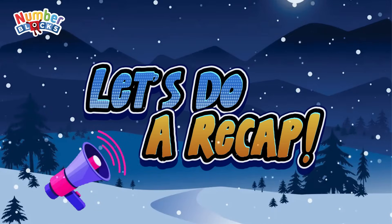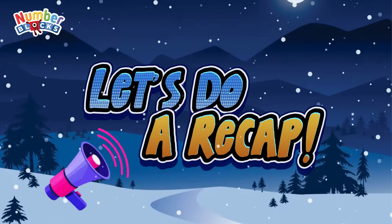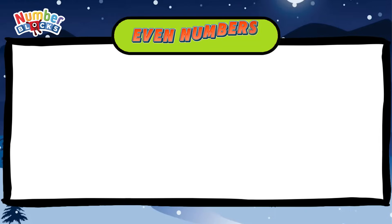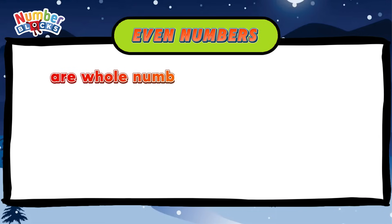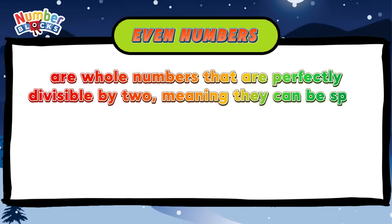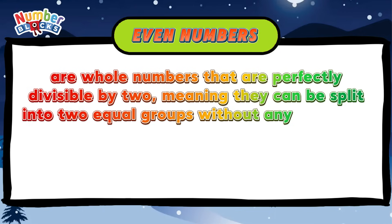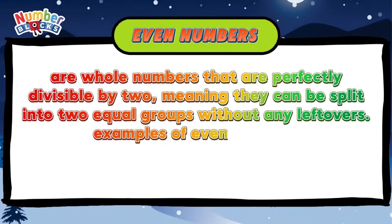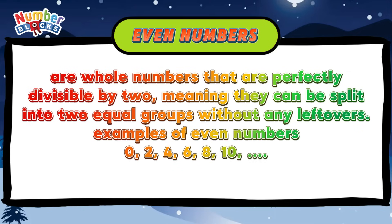Join me and let's do a recap! Even numbers are whole numbers that are perfectly divisible by two, meaning they can be split into two equal groups without any leftovers. Examples of even numbers: zero, two, four, six, eight, ten, and so on!